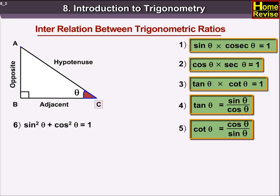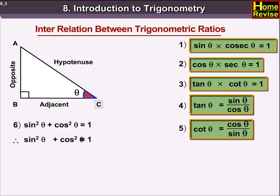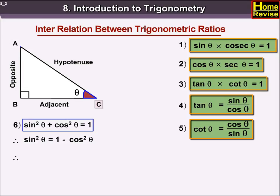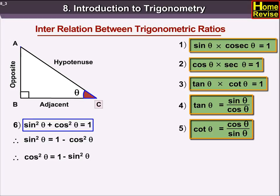Sin squared theta plus cos squared theta is equal to 1. Therefore, we can get sin squared theta is equal to 1 minus cos squared theta. Also, cos squared theta is equal to 1 minus sin squared theta.